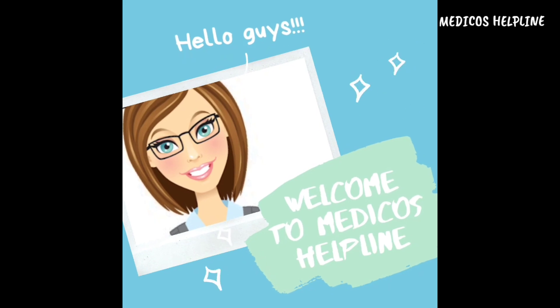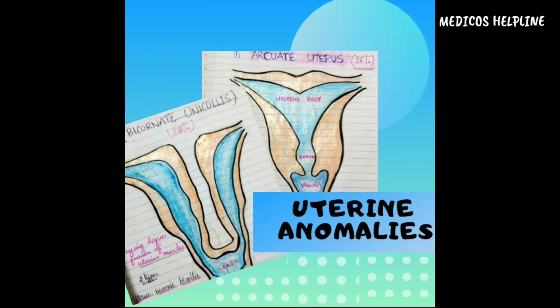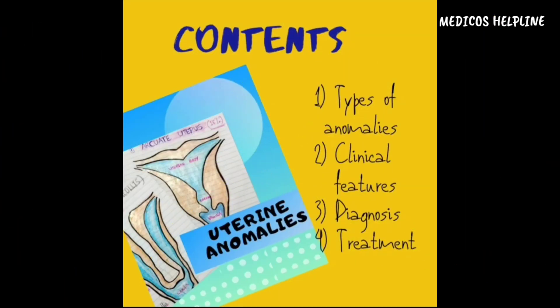Hi guys, what's up! Welcome back to Medical Cell Plan. Suppose a 15-year-old girl came up with a complaint of unusual pressure or cramping pain in the abdomen before or during a menstrual period and an abnormally high amount of bleeding during a menstrual period. The ultrasonography was suggested and the USD report says the presence of two uteruses in the pelvis. Can you imagine it? Yes, today we are going to discuss uterine anomalies.